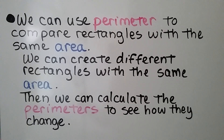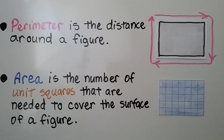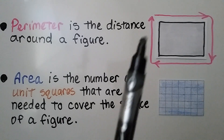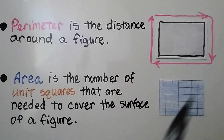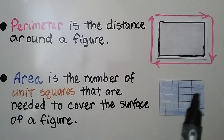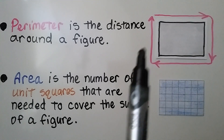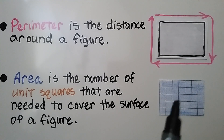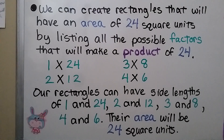We can use perimeter to compare rectangles with the same area. We can create different rectangles with the same area, then calculate their perimeters to see how they change. Perimeter is the distance around a figure — like a fence around a yard or walls around a room. Area is the number of unit squares needed to cover the surface of a figure, like floor tiles.